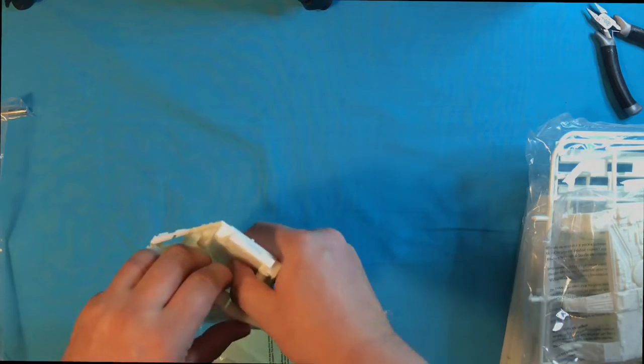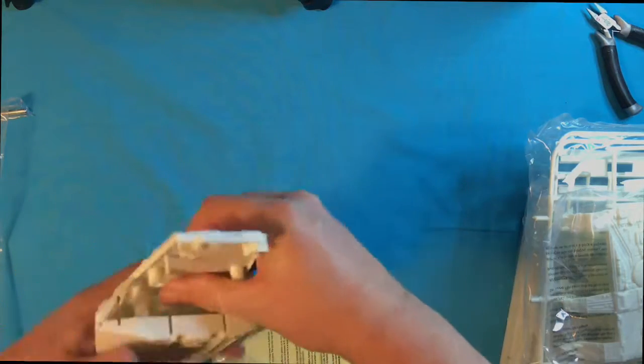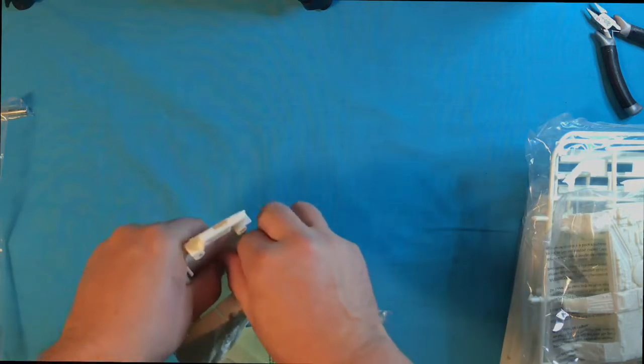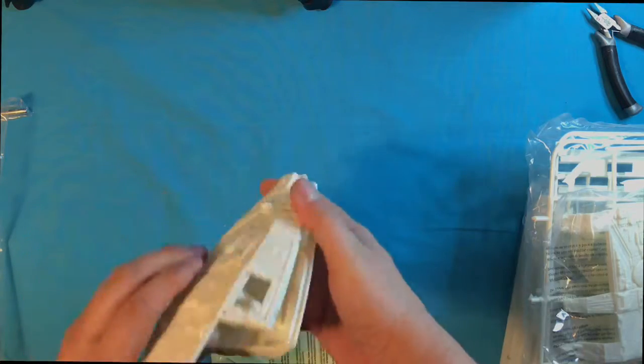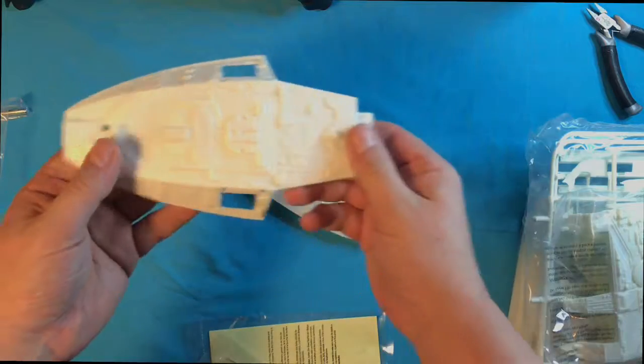This is the bridge, the forward section of the ship. It actually came miraculously joined together already and it was a bit of a bugger to get apart.